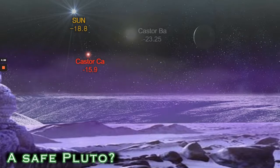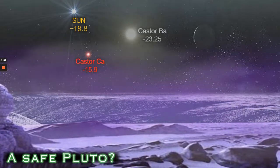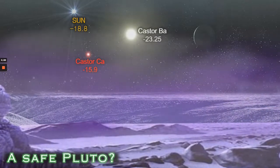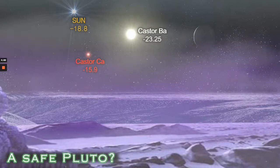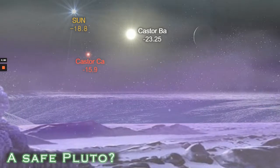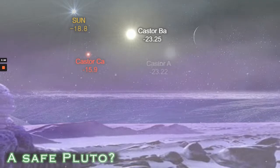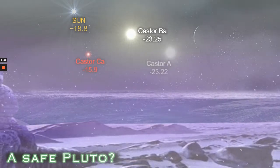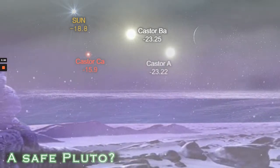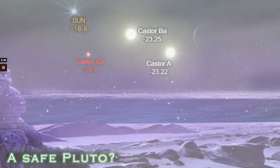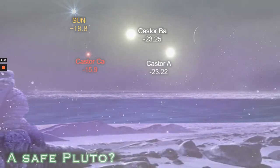Castor CA of course is even dimmer at minus 15.9 apparent magnitude and barely impacts the system at all. Finally some lighting in pink arrives as Castor BA rises at minus 23 magnitudes and begins to slowly awaken the Plutonian atmosphere. Castor AA is also around minus 23 magnitudes and is roughly the brightest sun at planet Jupiter.